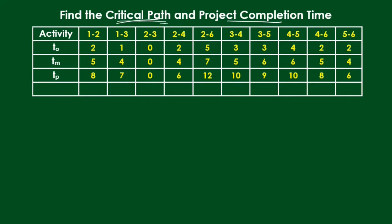For each activity the optimistic time (T0), most likely time (Tm), and pessimistic time (Tp) are given. For activity 1-2: if everything goes perfectly as per plan, we can complete it in 2 days. The average time of completion is 5 days, and if everything went wrong, the pessimistic completion time is 8 days.